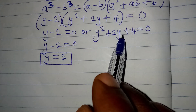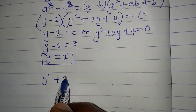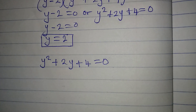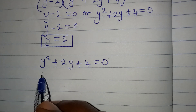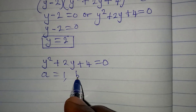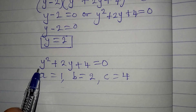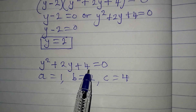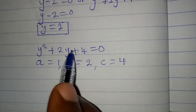To get the other solutions we go to the quadratic equation y squared plus 2y plus 4 equals 0. We can't factorize this, so we apply the quadratic formula, where a equals 1 (coefficient of y squared), b equals 2 (coefficient of y), and c equals 4 (the constant).